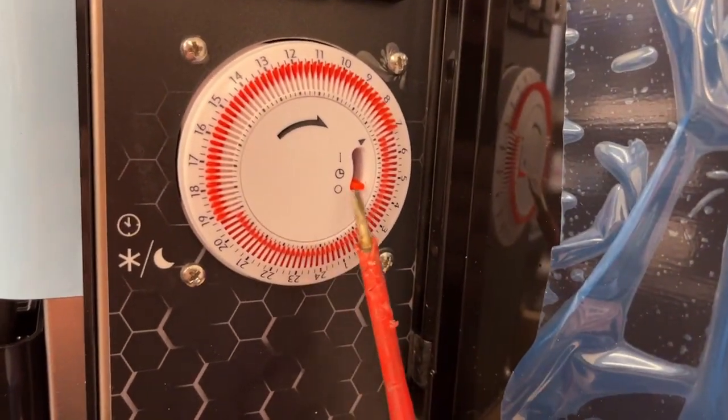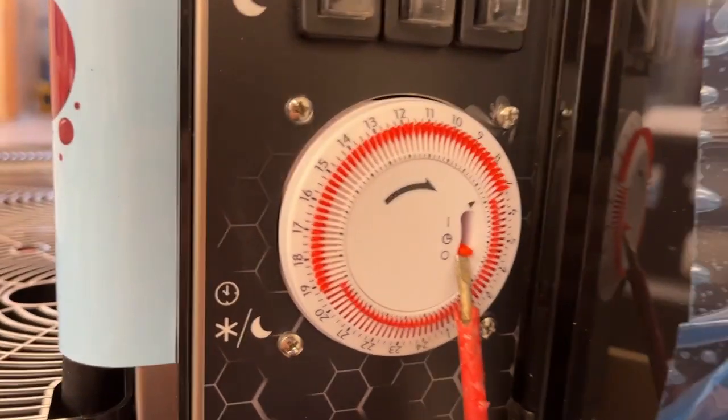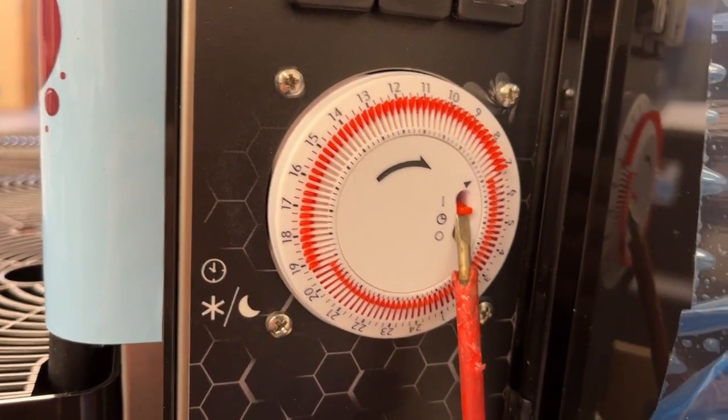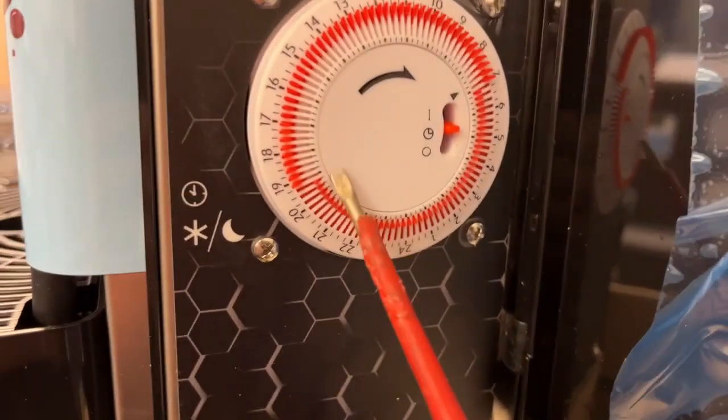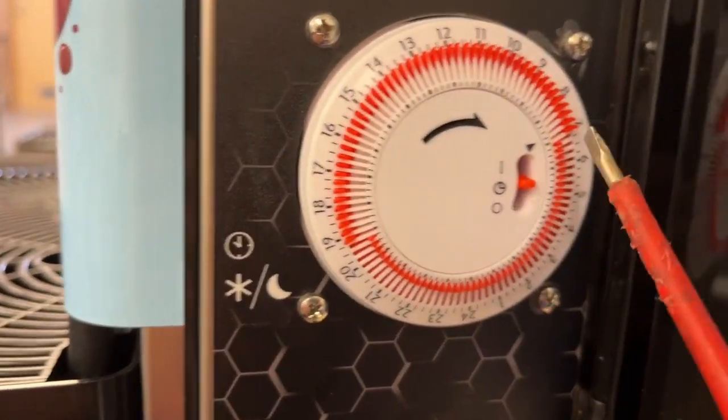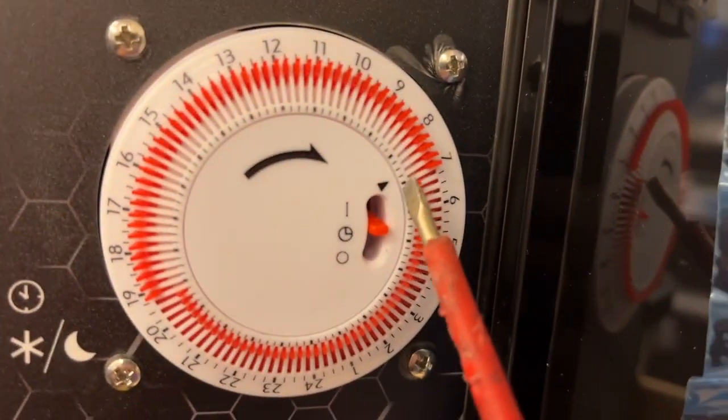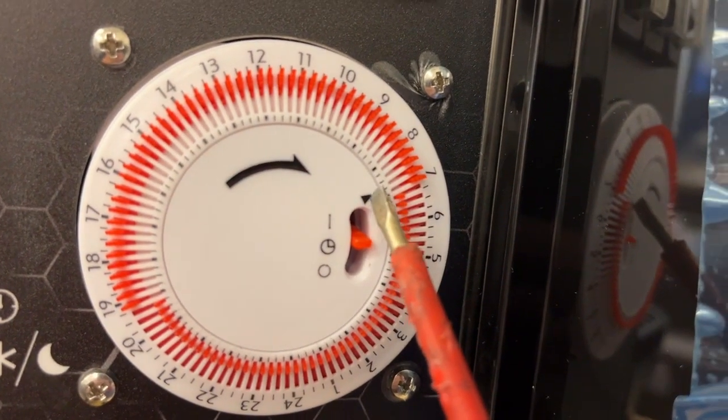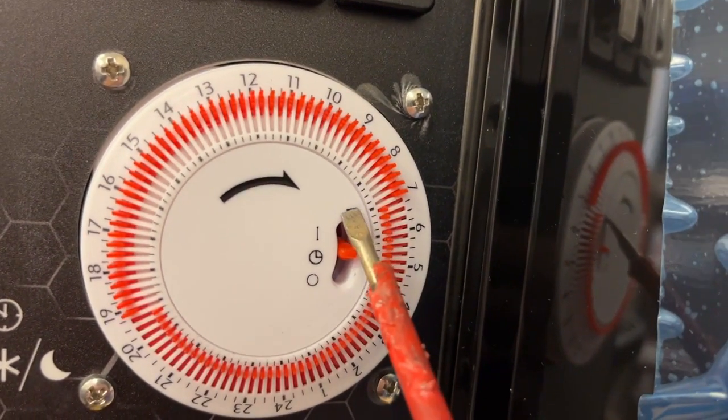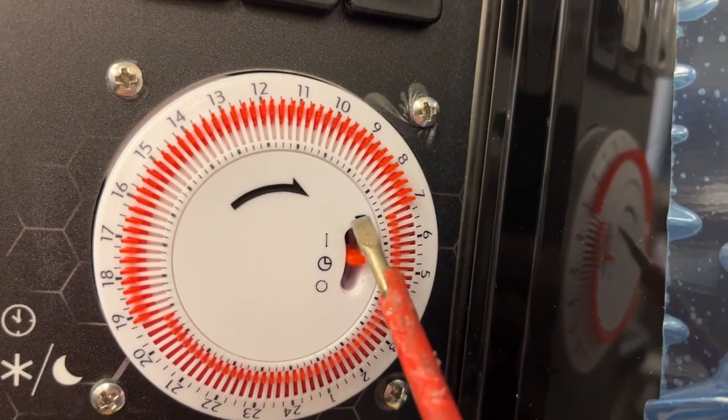So we want this one to be here at the clock, in the middle position. And then you have this little arrow here. This one is supposed to point towards the clock, the time now.